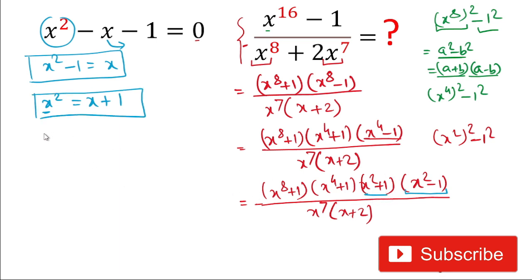Now for x² + 1: since x² = x + 1, we add 1 to both sides, giving x² + 1 = x + 2. So we have the value of x² + 1 as well.